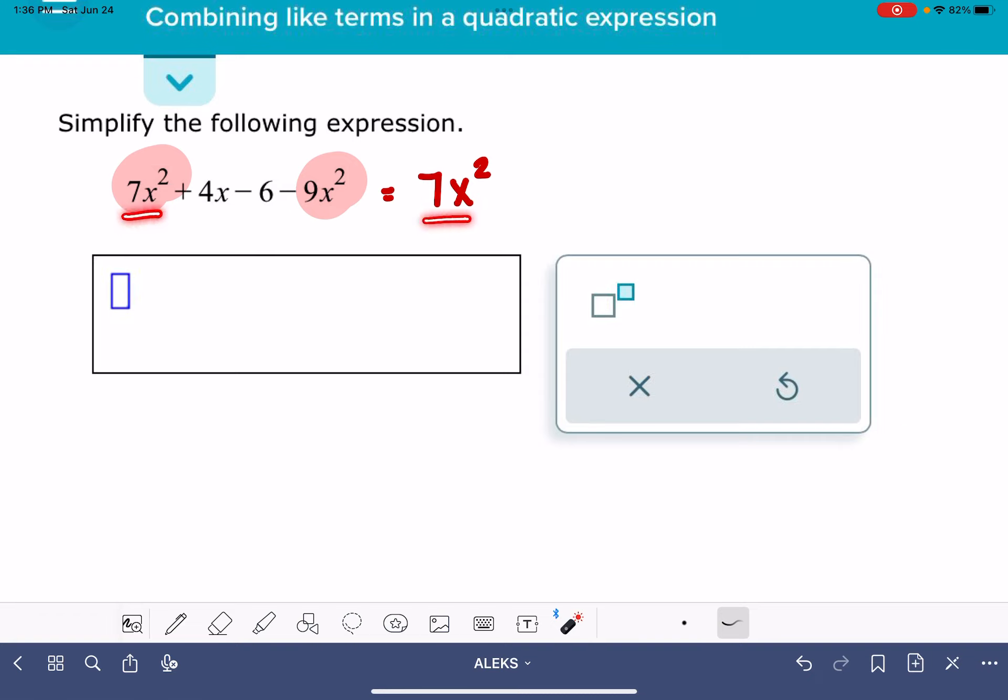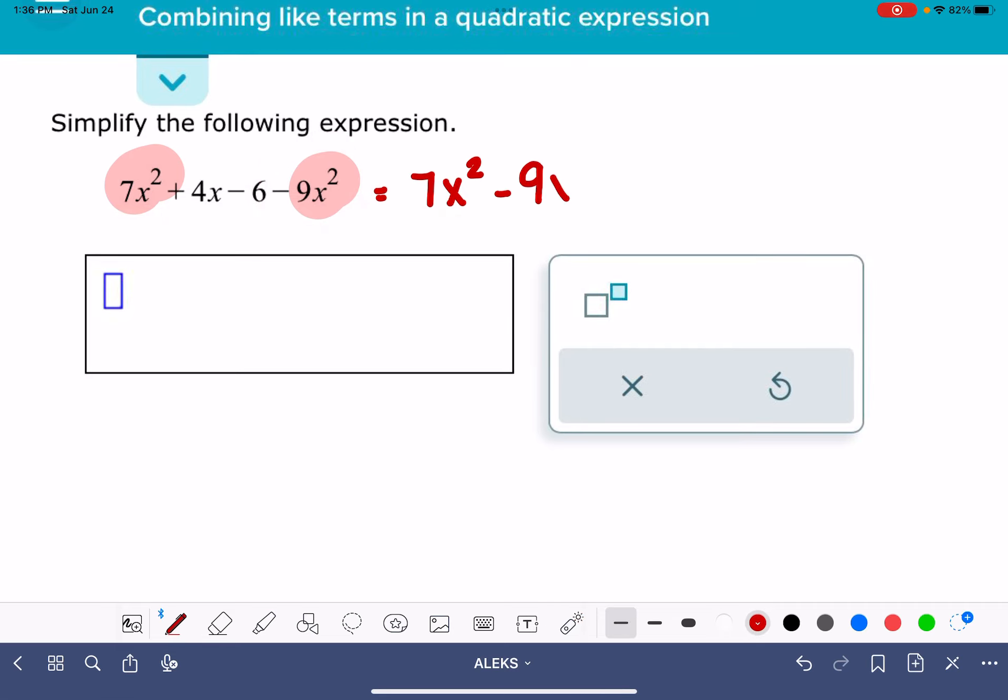So I've got 7x squared, and then I also have a negative 9x squared. Make sure that you're taking the sign, whether it's negative or positive, take that along with the term as you're rearranging the terms in this equation.